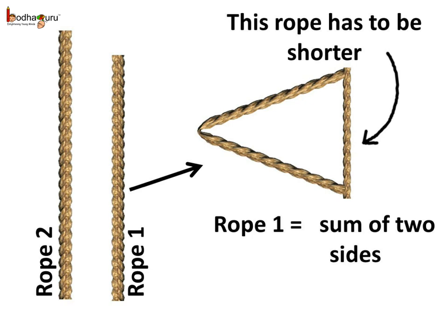So we see the length of rope 1, which was shorter than rope 2, is the sum of two sides after making an angle using it. And the length of the rope joining the two ends of rope 1 has to be shorter than rope 1.